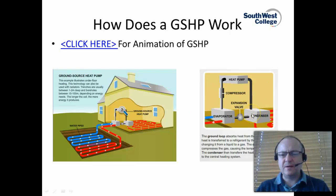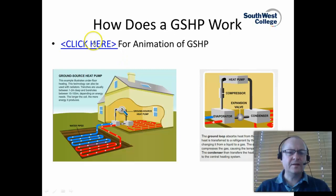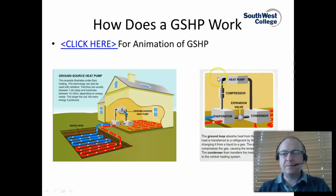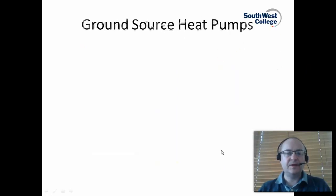The hot gas is then cooled and returns back into the evaporator via the expansion valve. You can click on the animation to see it in full at the Energy Saving Trust. The main components to remember from this slide are the condenser, evaporator, expansion valve, the compressor, and the heat pump circulating pump.